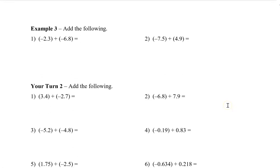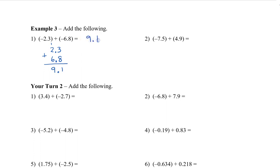Here we have two numbers to add: negative 2.3 plus negative 6.8. Because both of the numbers have the same sign, we are going to add the two together. We get 11, so we carry the 1. 6 plus 2 plus 1 is 9, and then we bring the decimal down, giving us 9.1. Because we were adding and both of the numbers are negative, we're going to have more negative, so this will be negative 9.1.